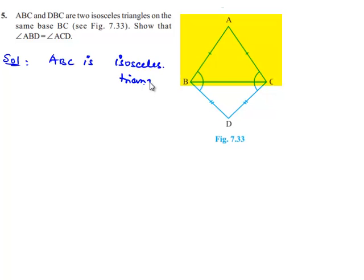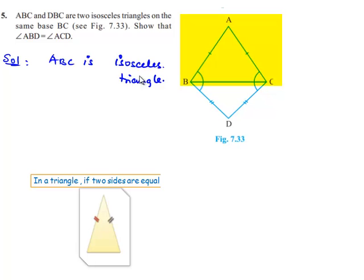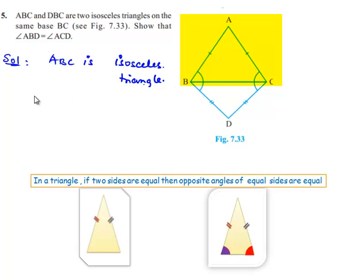We know that in an isosceles triangle, the angles opposite to equal sides are equal. We can equate angle ABC and angle ACB.